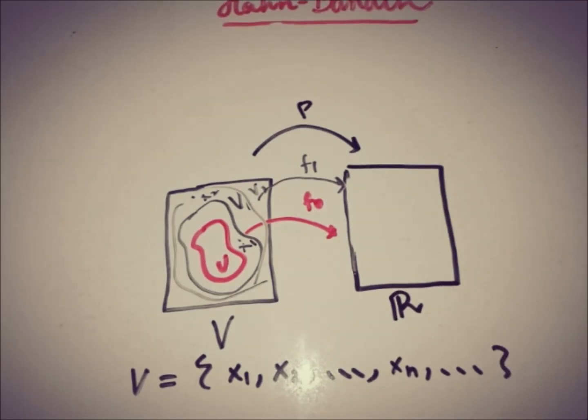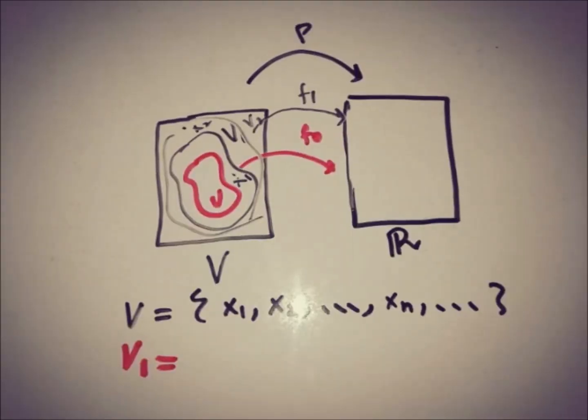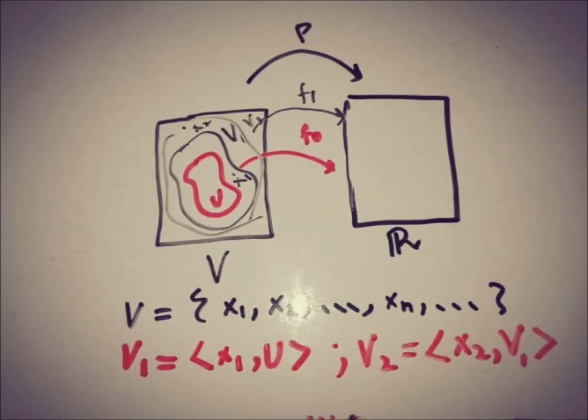So we can form such types of spaces with the help of the induction process: v1 is generated by x1 and u, v2 is generated by x2 and v1, and so on.